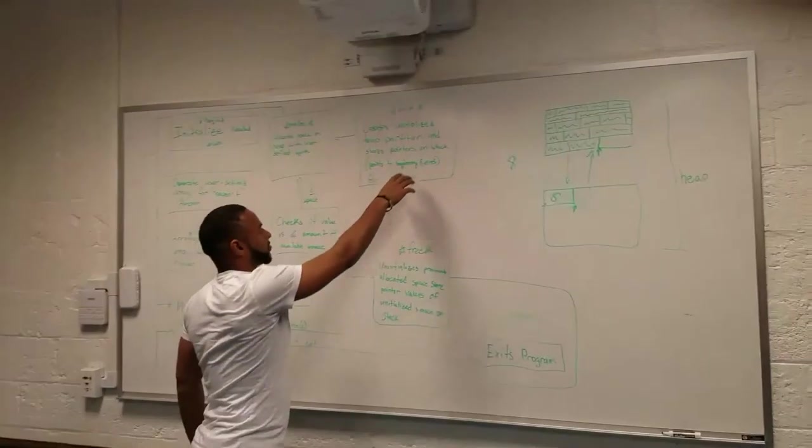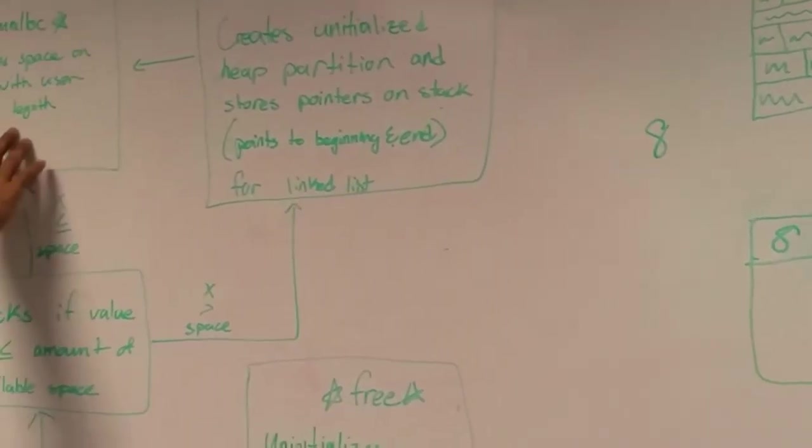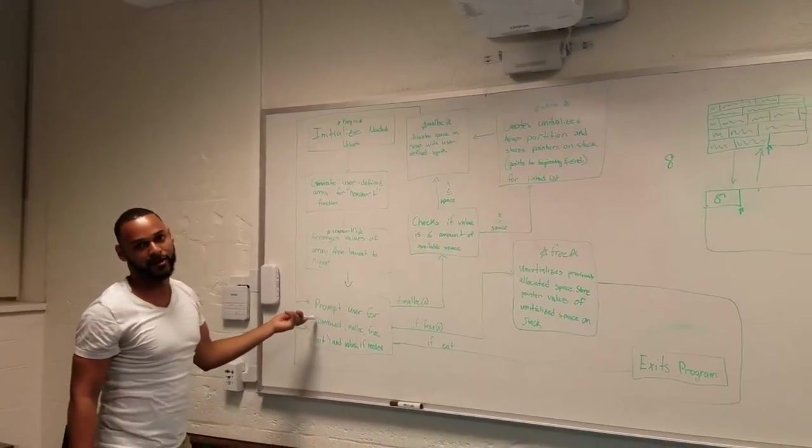So after we call S-break, the values are actually allocated in malloc, and then we return to our prompt function.